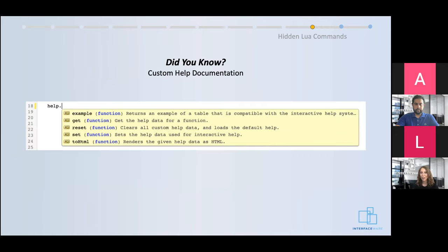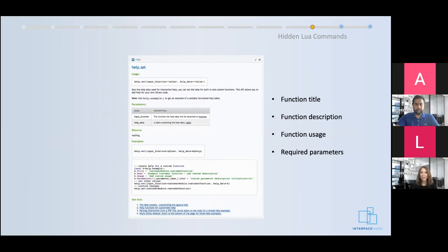If you've ever developed in Iguana, you've probably created customized functions and modules within the translator — one of the big advantages of working within a script-based environment. Did you know that you can also create custom help documentation for any of those functions you create? This can be done using the Lua help function, and more specifically the help.set function. This allows you to access and apply settings for things like your function's title, a description, its use, and any required parameters. Anytime you create user-facing functions, you should define help documentation for them, since this will help your developers or other Iguana users understand the purpose of that function.